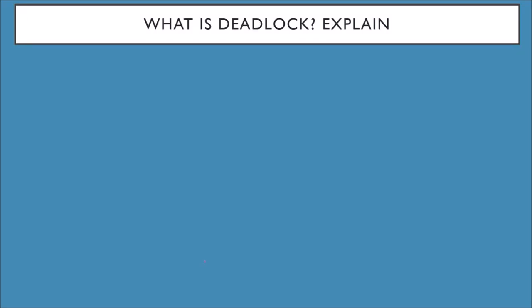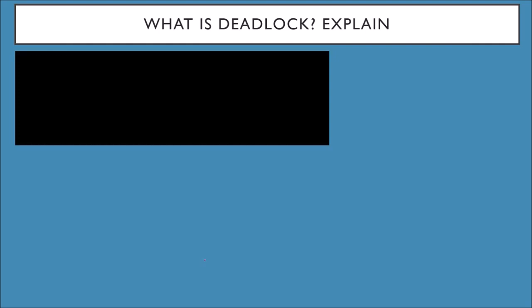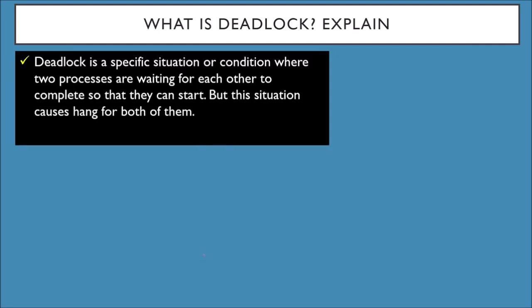What is deadlock? Explain. This is an operating system question. Deadlock is a specific situation or condition where two processes are waiting for each other to complete so they can start, but this situation causes a hang for both of them.